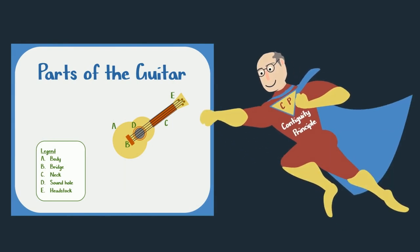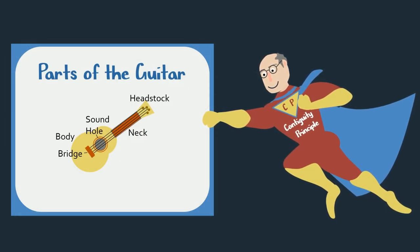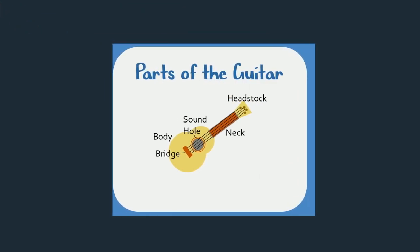Mayer's Contiguity Principle helps us improve the quality of our graphics by making sure on-screen text and narration aligns with the graphics.